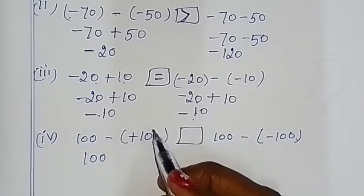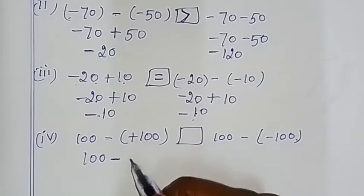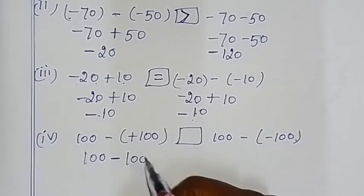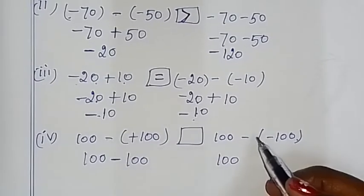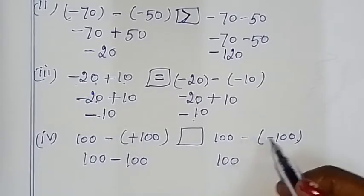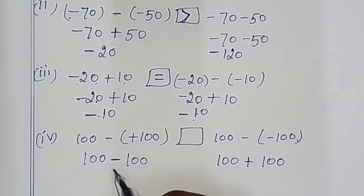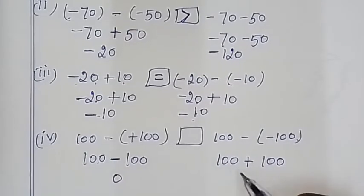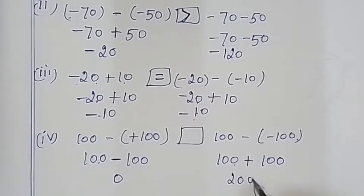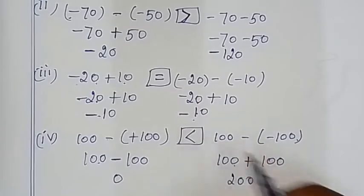So minus — if we add minus, the answer is 100. Here is 100 — two symbols: minus × minus = plus, so plus 100. So 100 minus 100 = 0, and 100 plus 100 = 200. So 0 is smaller, 200 is plus 200 — 0 is less than 200, so use the less than symbol, open towards the 200 side like a crocodile.